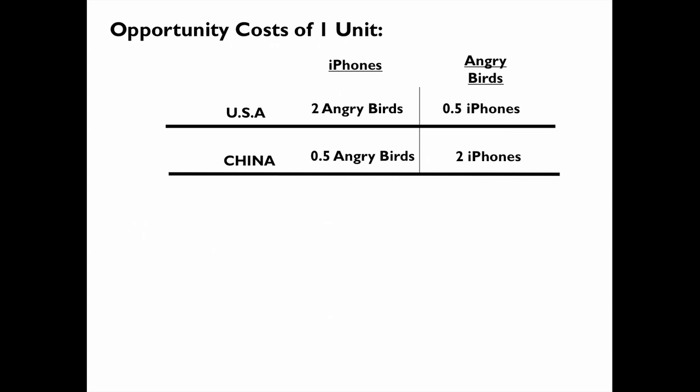If the countries trade based on this opportunity cost, and not on the total or absolute advantage, then China should produce the iPhones and the US should produce the Angry Birds. I calculated this opportunity cost first and decided who was going to produce what. The low-cost producer of an iPhone is China, so China will produce most of the iPhones. The low-cost producer of Angry Birds is the US, so the US will produce most of the Angry Birds.